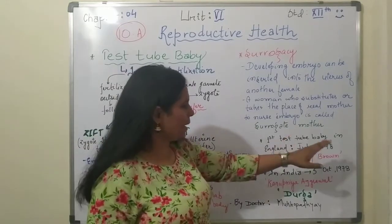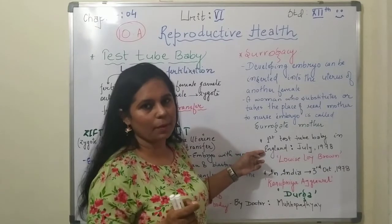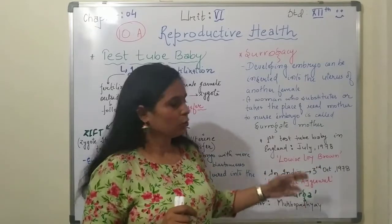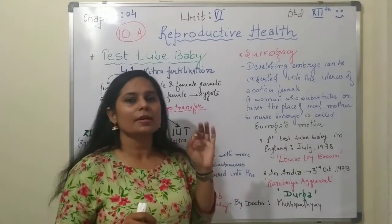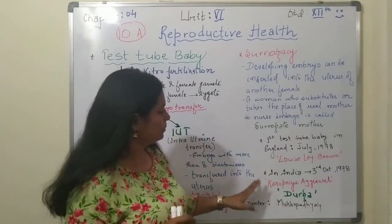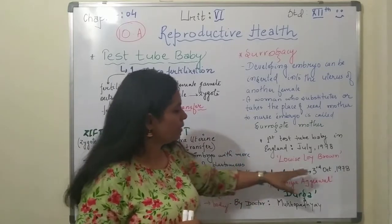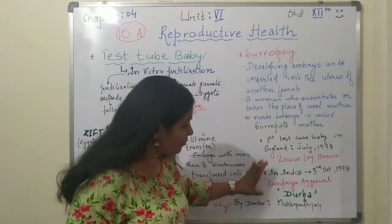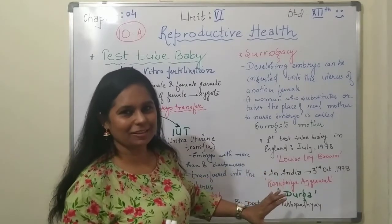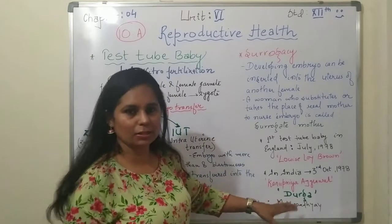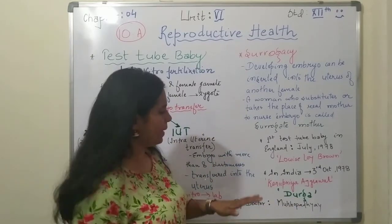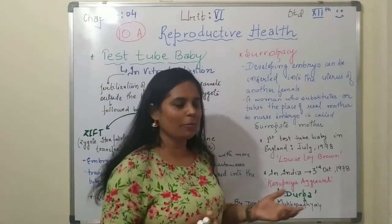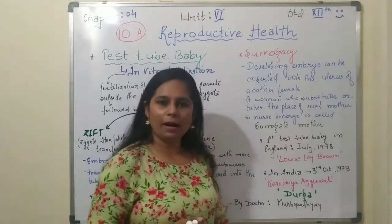The first test tube baby was born in England in July 1978, and that baby was named Louise Joy Brown. Next, in India, the first test tube baby was born on 3rd October 1978. The baby was called Durga because it was a girl child, and the doctor was Mukhopadhyaya. The actual name of that first Indian test tube baby is Kanupriya Agrawal — she was called Durga but her name is Kanupriya Agrawal.